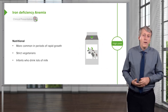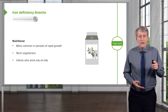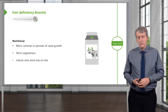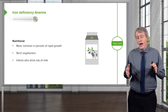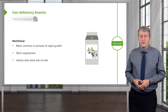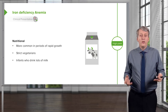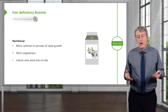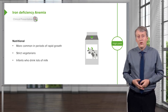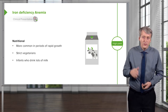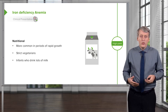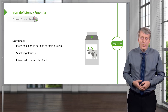Most commonly we see it in infants who drink lots of milk. I've had many patients come in and mom says that's the only thing he'll eat, and I want him to grow, so I give him four glasses of eight ounces of milk a day. Those children are going to present with anemia.